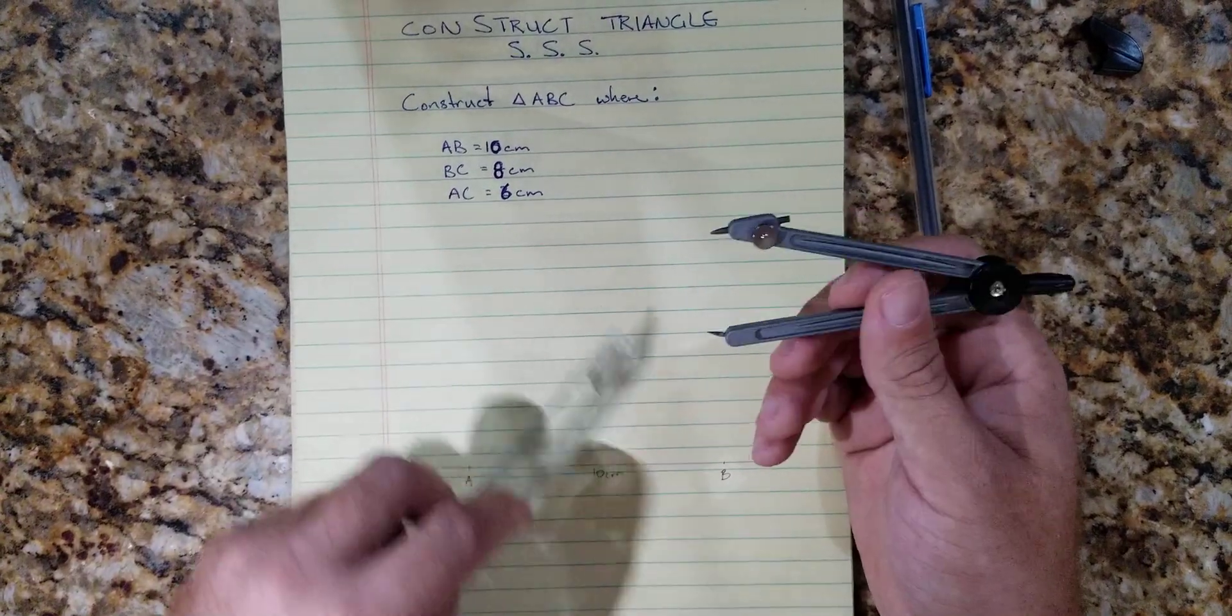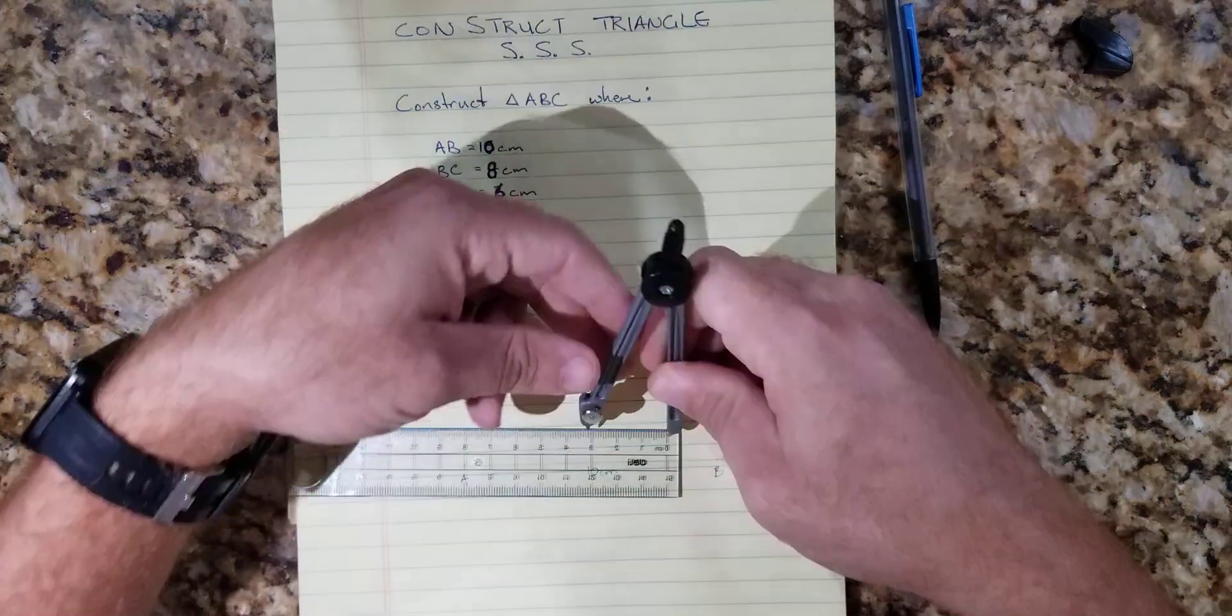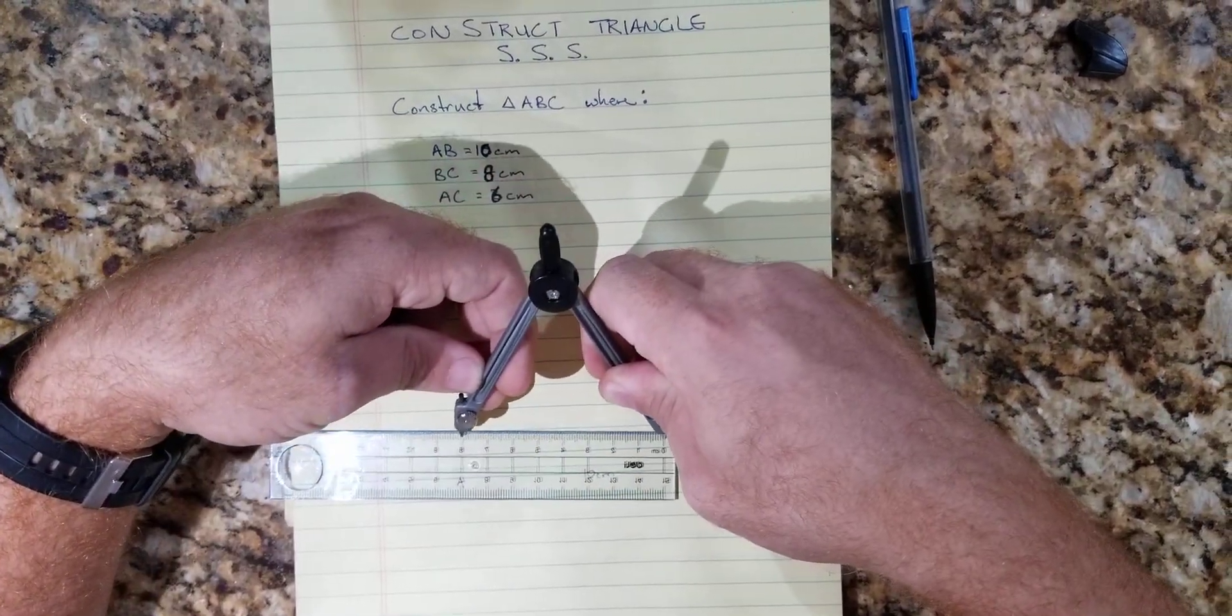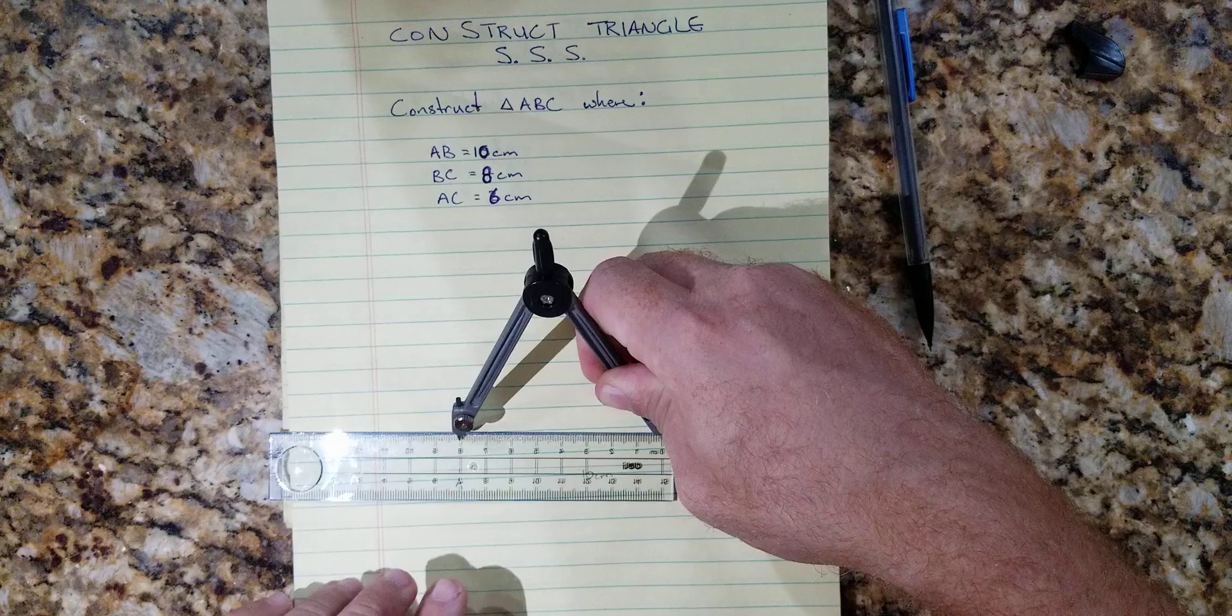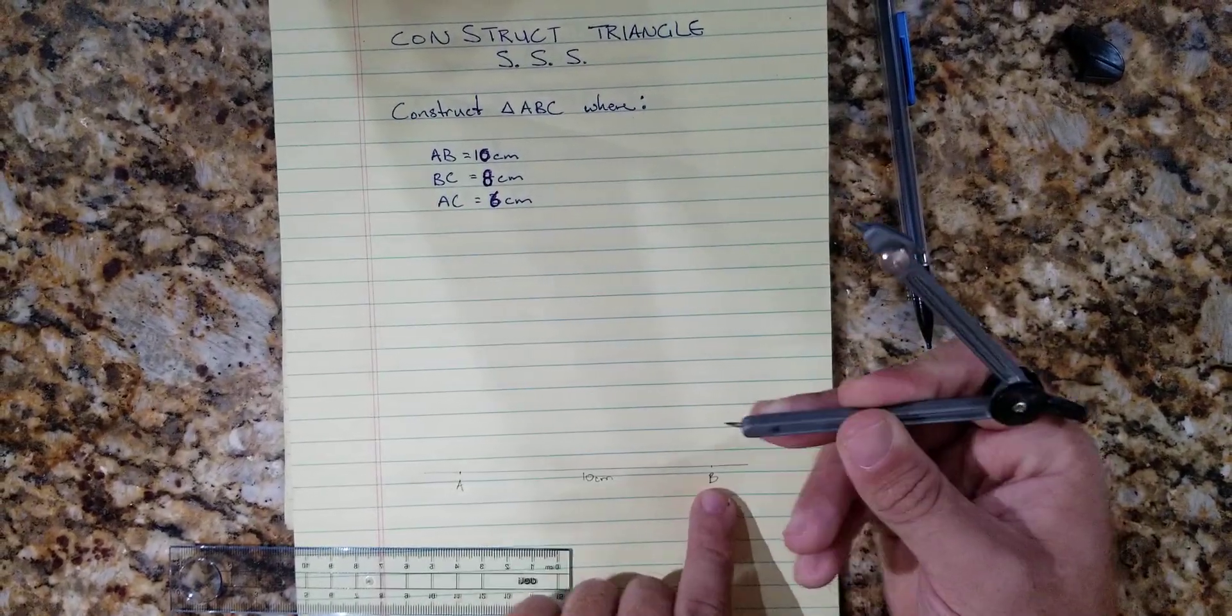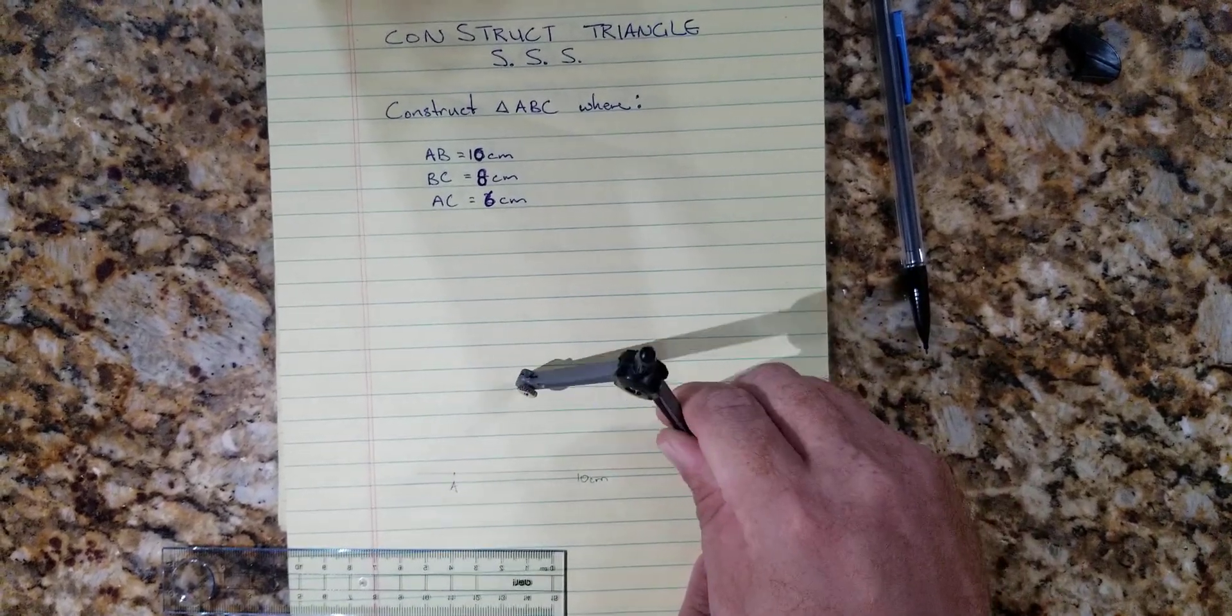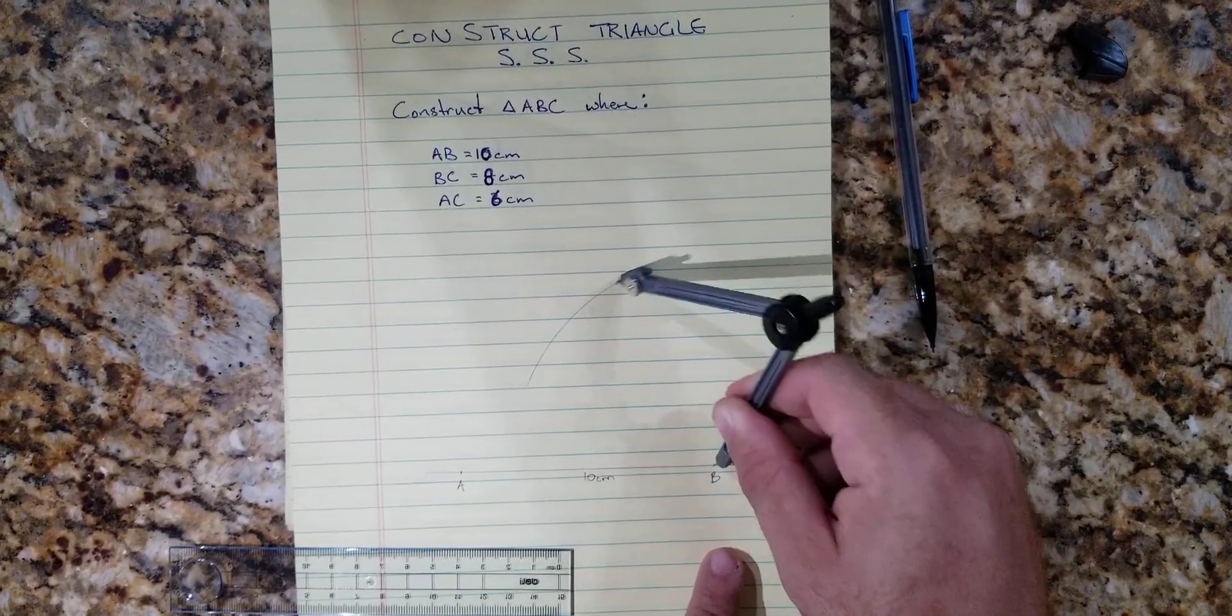So what we'll do is use our compass and open it out to 8 centimeters. Now that it's at 8 centimeters, we put our compass point at B and we're going to scribe a big arc.